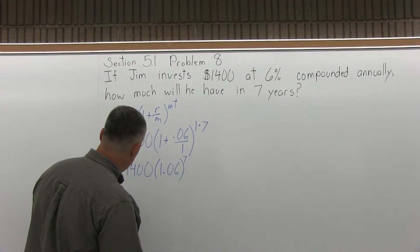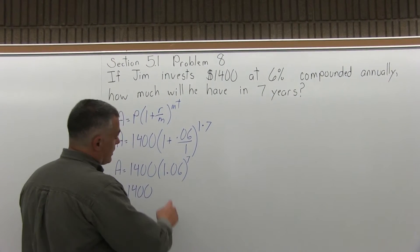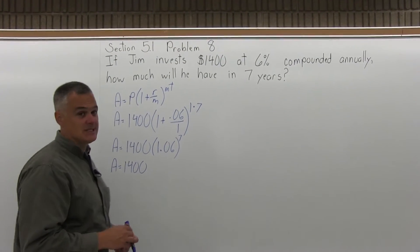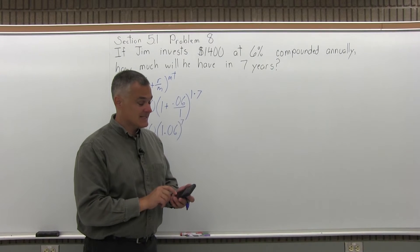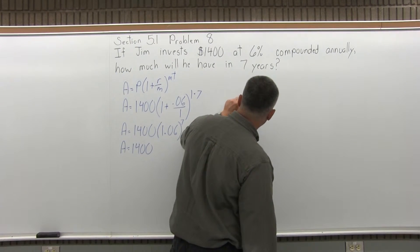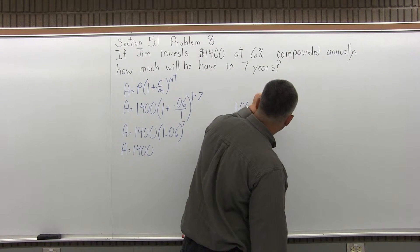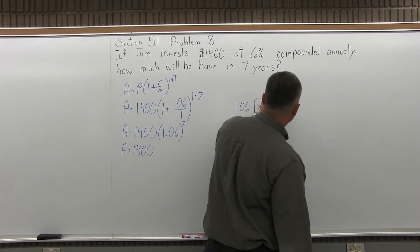A equals 1,400 times whatever I get when I do 1.06 to the 7th power. And it's not 1.06 times 7. It's 1.06 times 1.06 times 1.06 seven times. So with the calculator, you want to enter the base of 1.06, use your exponent button, which on my calculator looks like x to the y power, and then enter the exponent of 7.